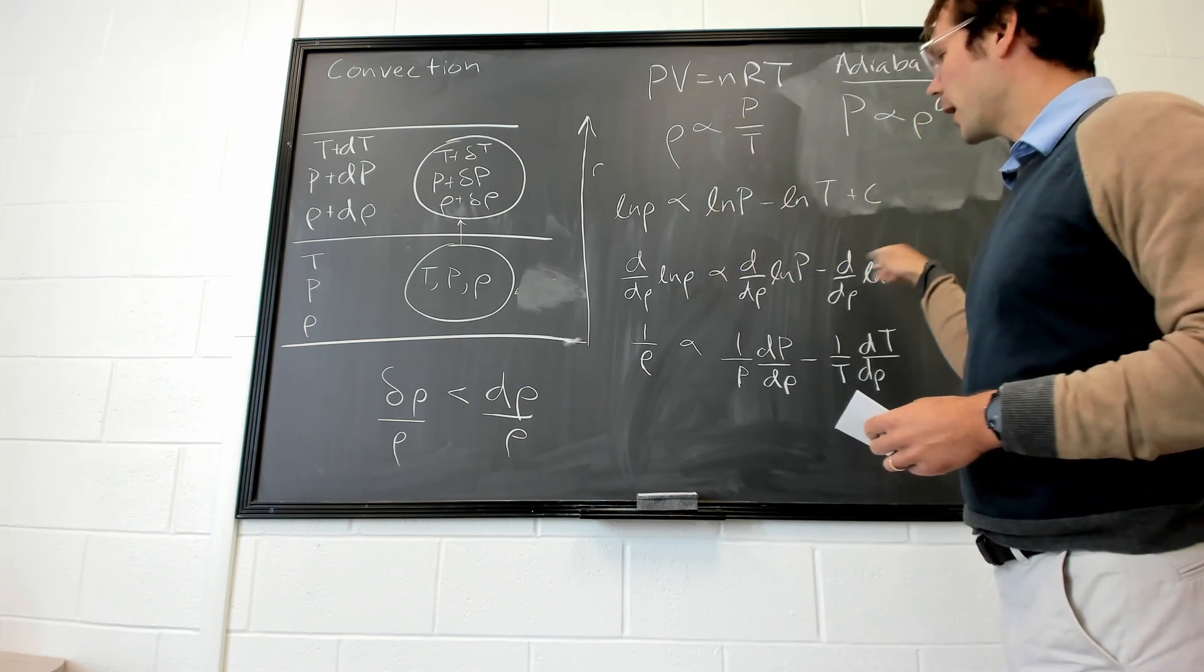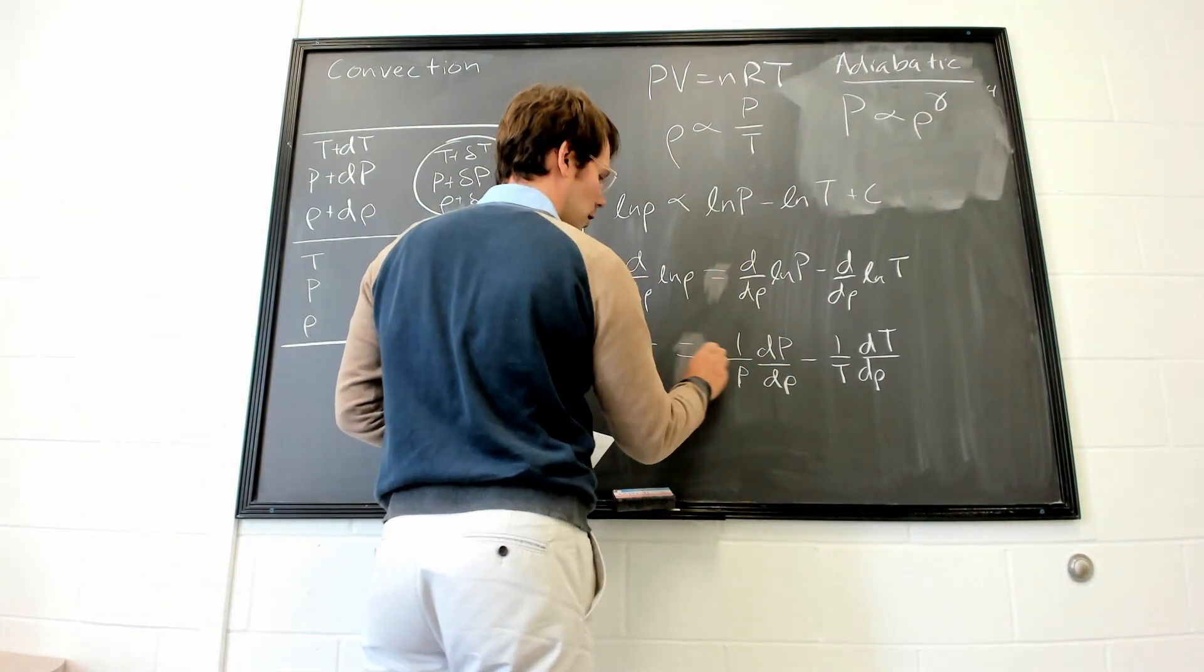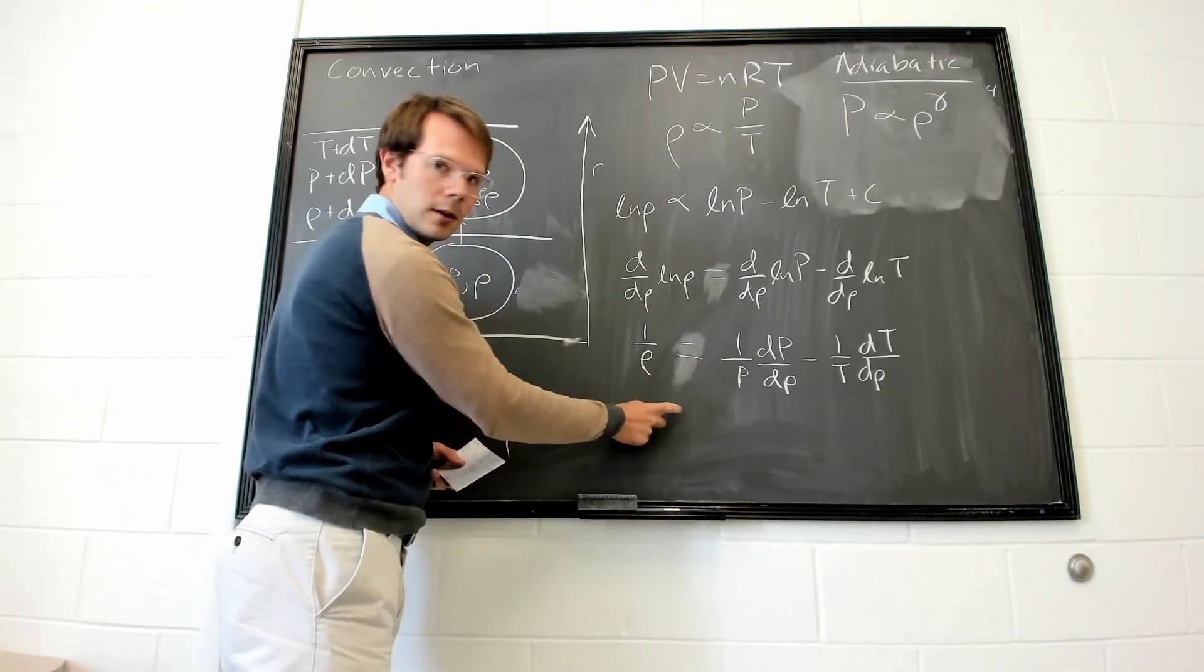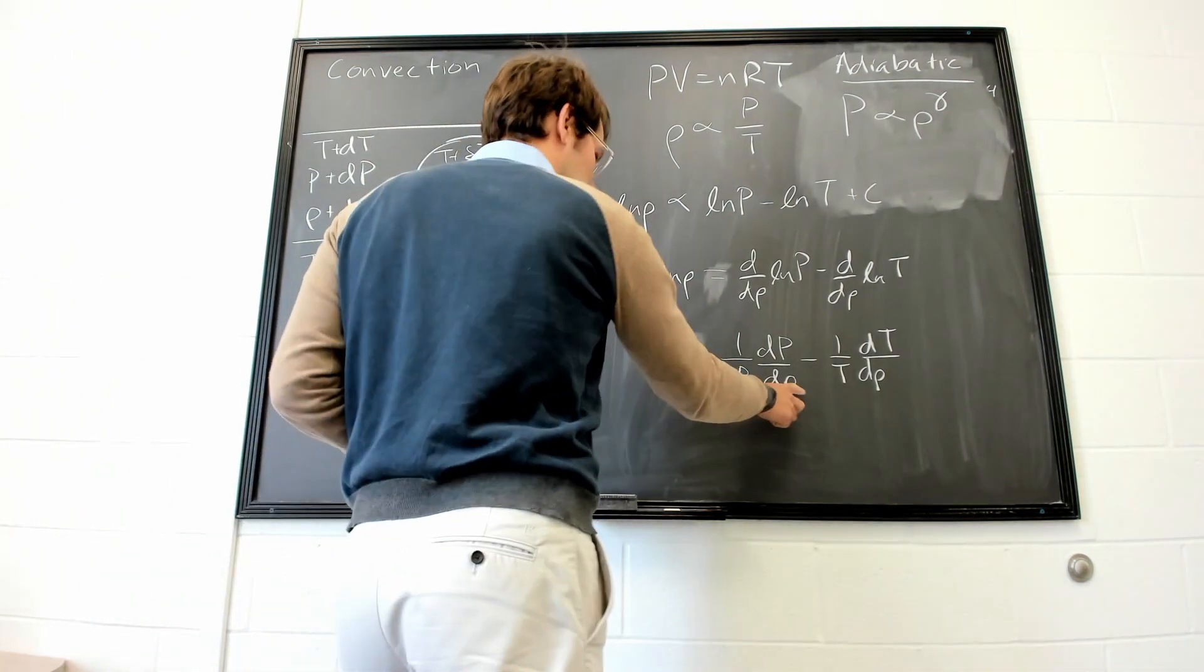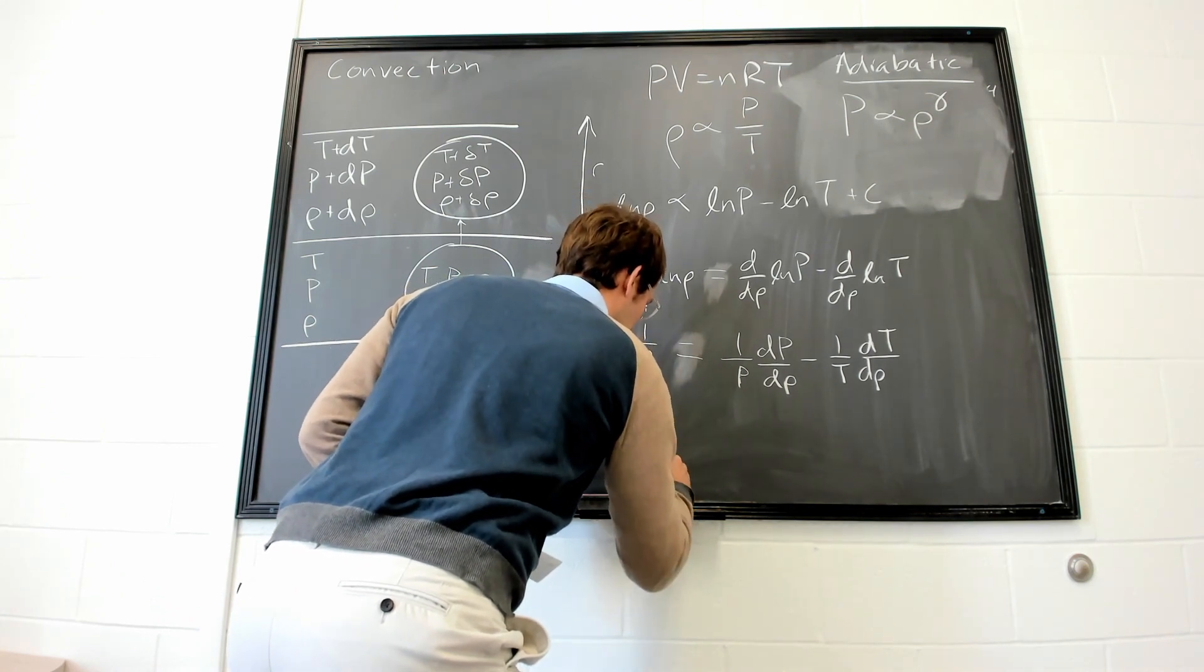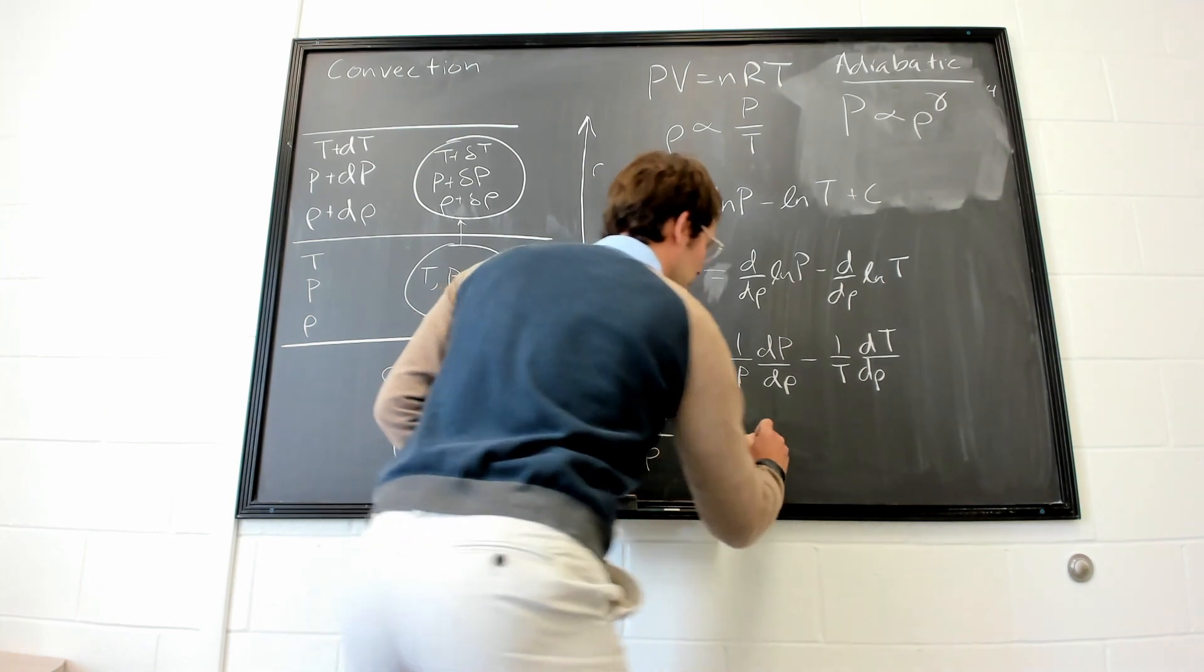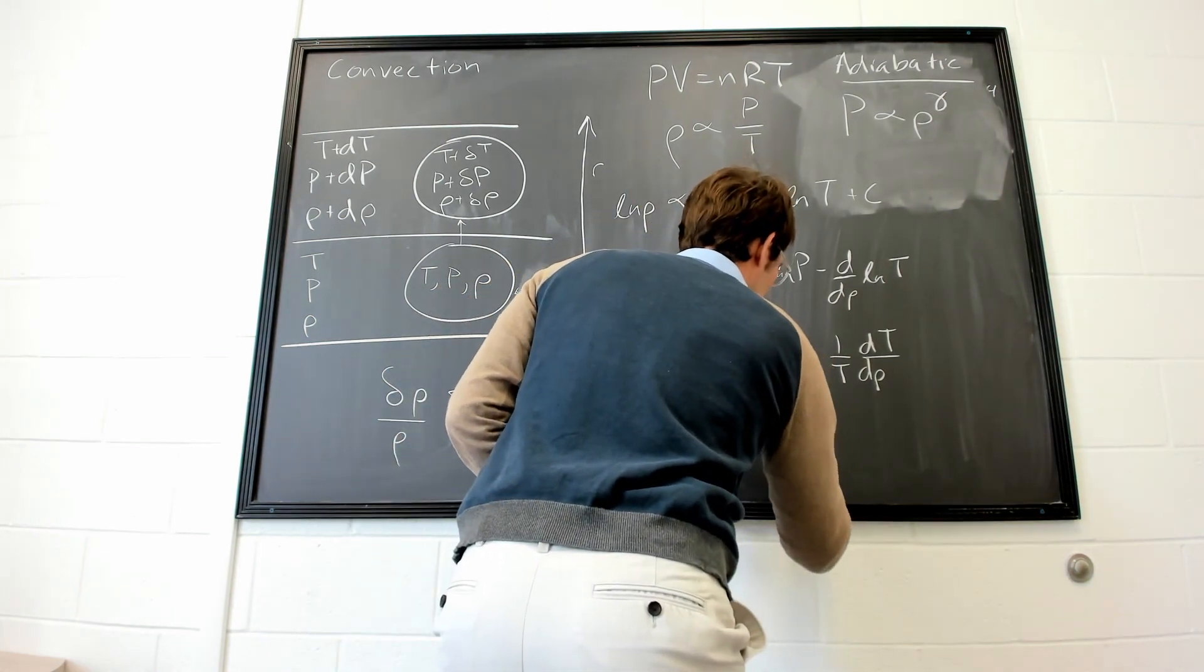And so we can turn these proportionalities into equalities. And then we can do one little bit of rearranging here. We can bring the drho's over to this side.